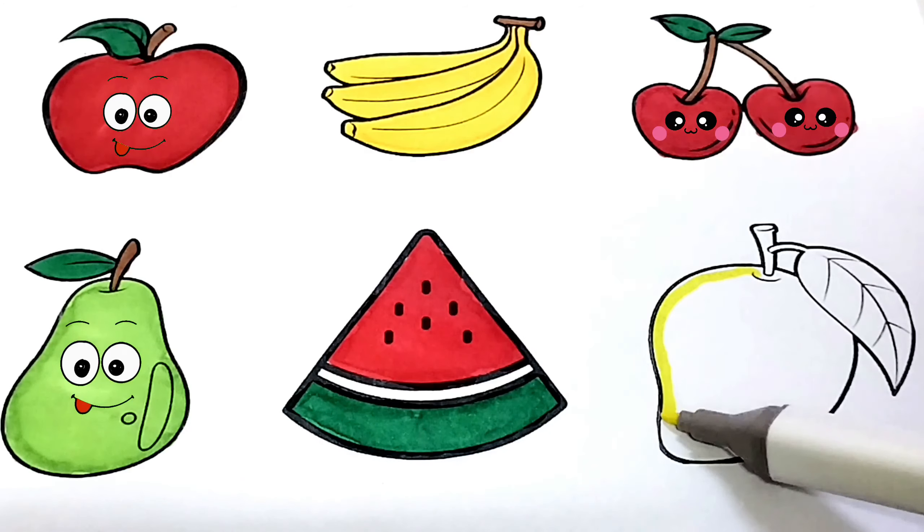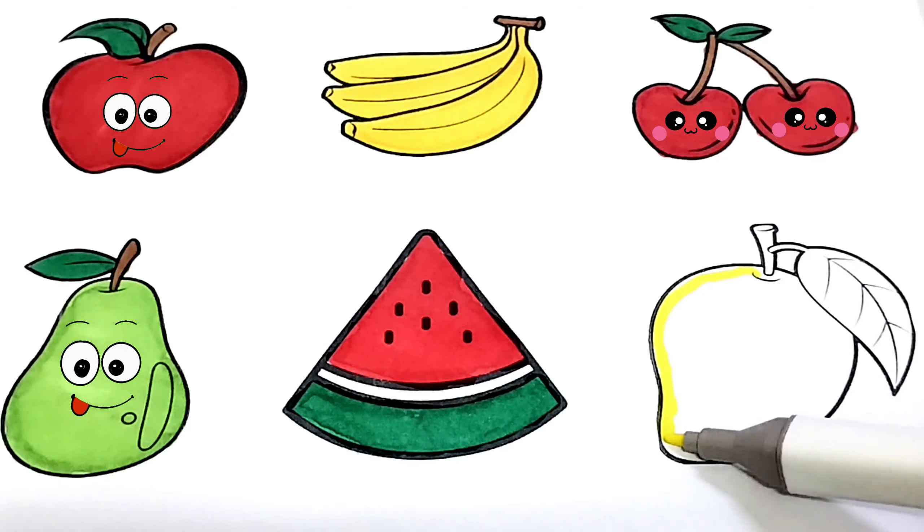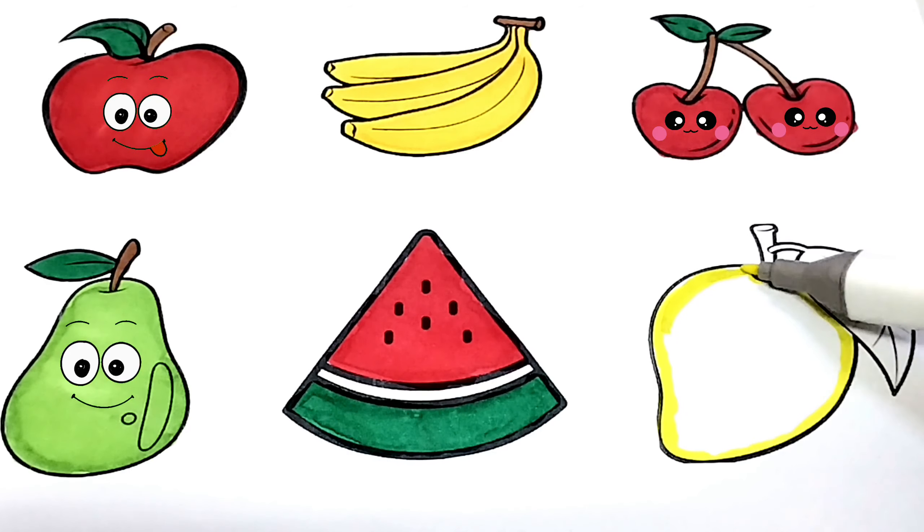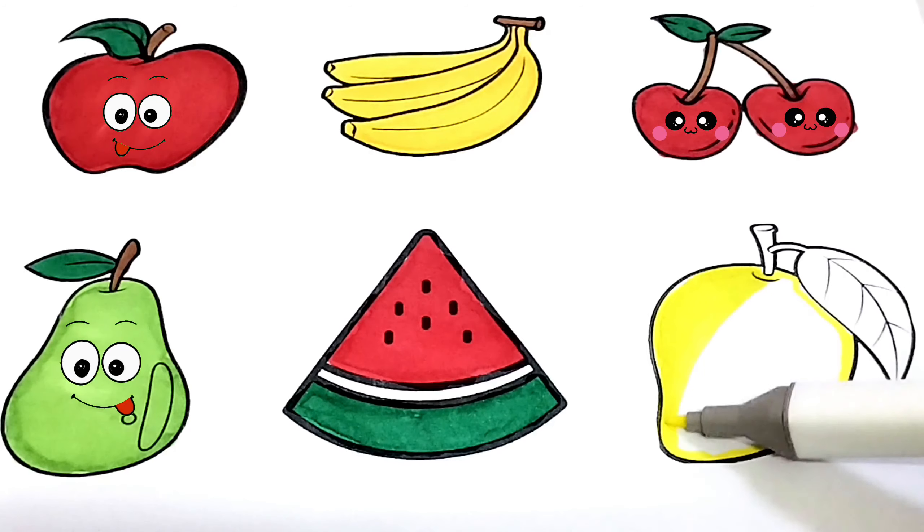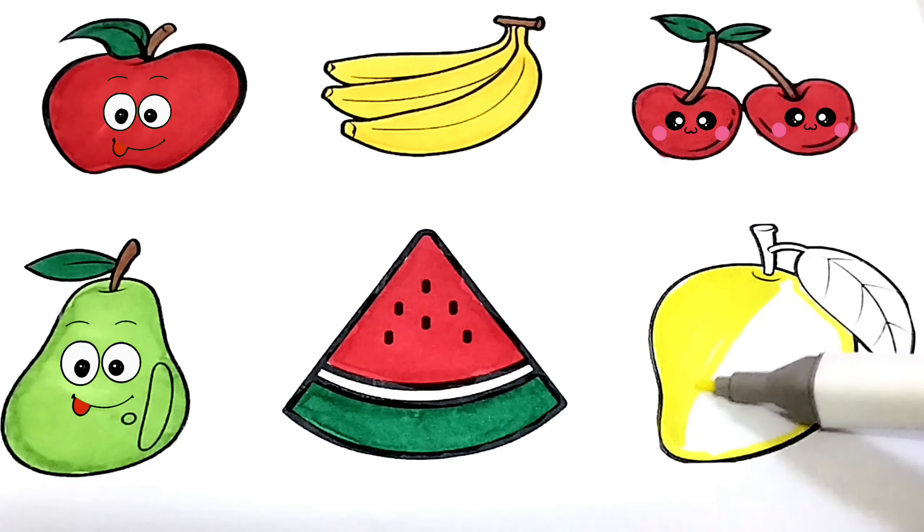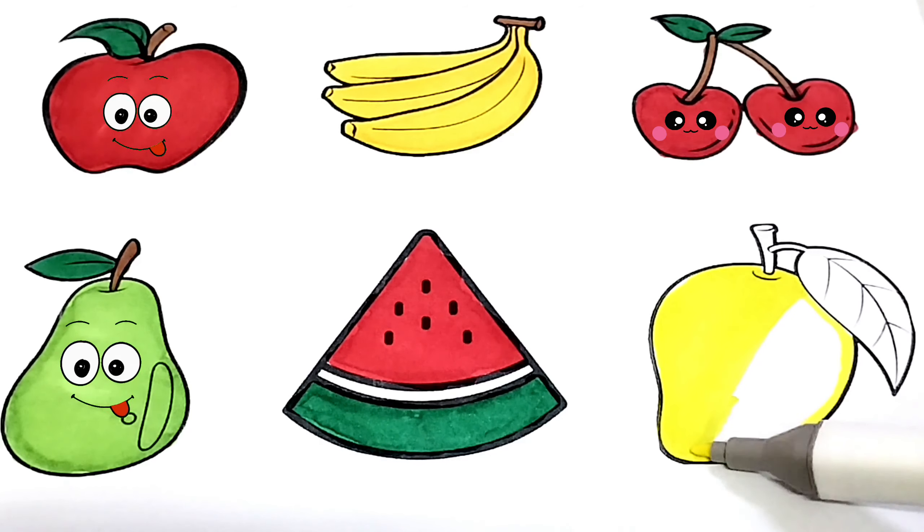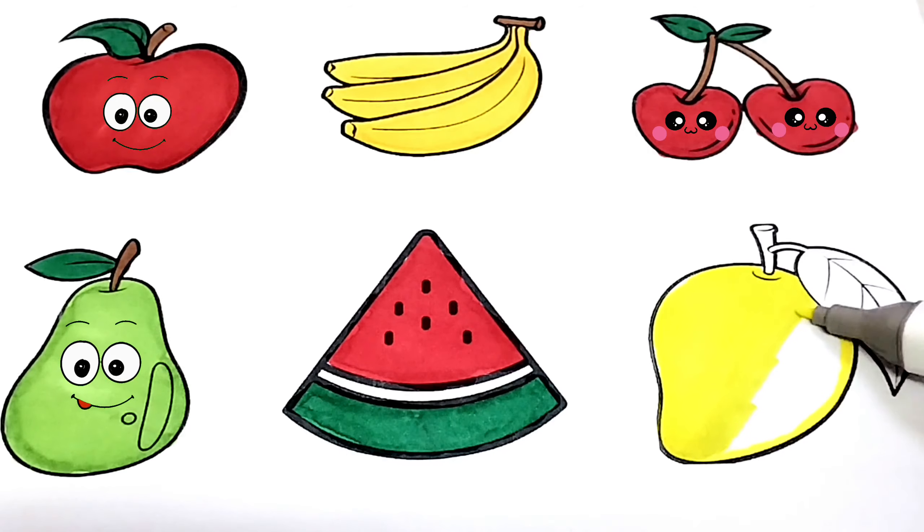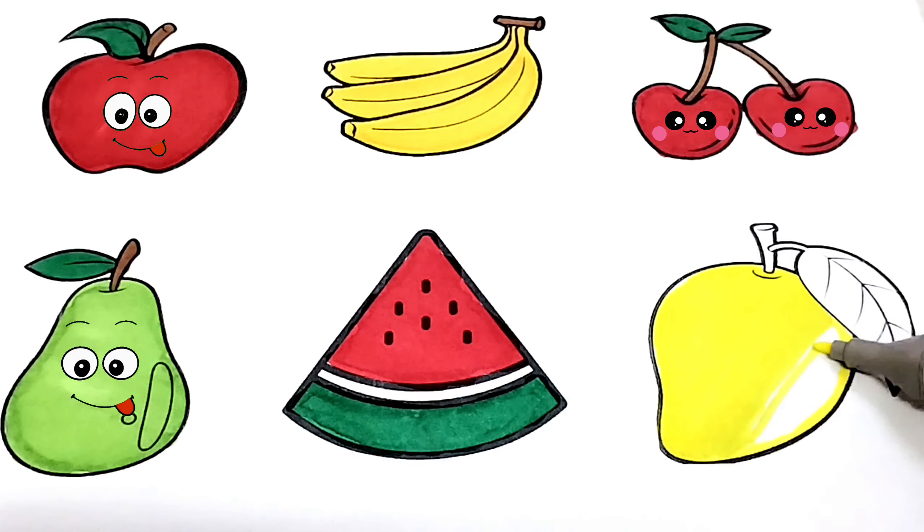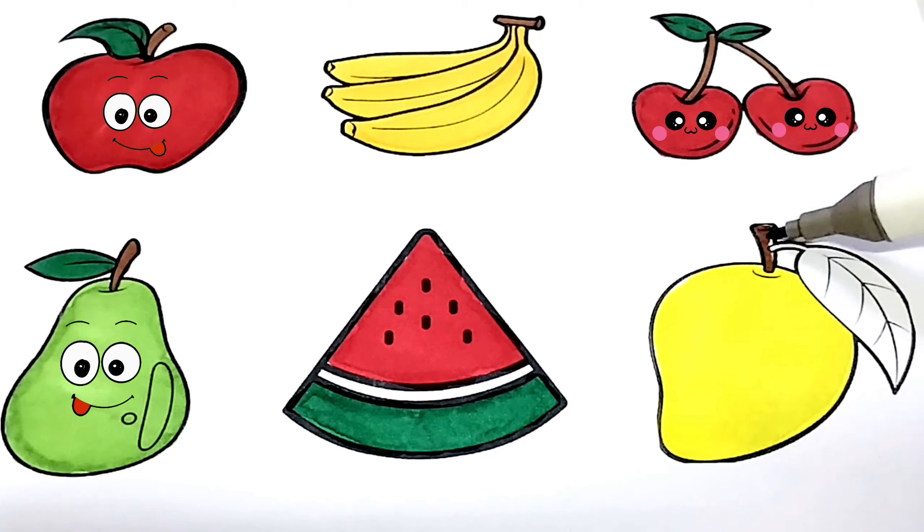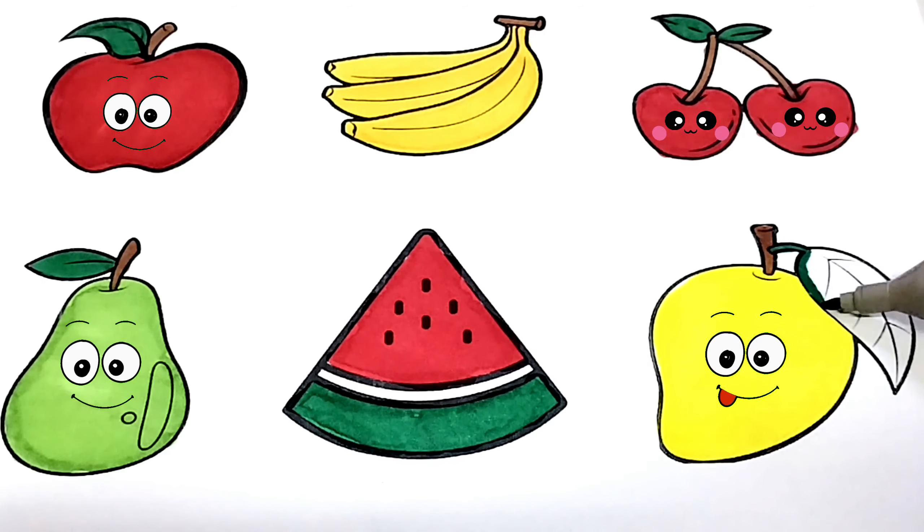Next is most favorite fruit of everyone. Yes, it's mango. I am coloring yellow color in mango. It's a summer fruit. Don't forget to subscribe to my channel. I am coloring brown color. Now I am coloring green color in the leaf.